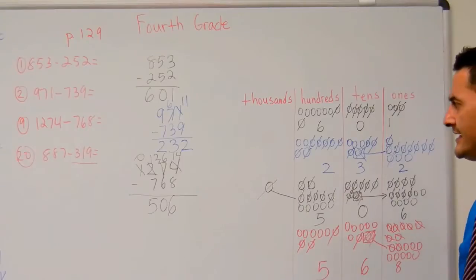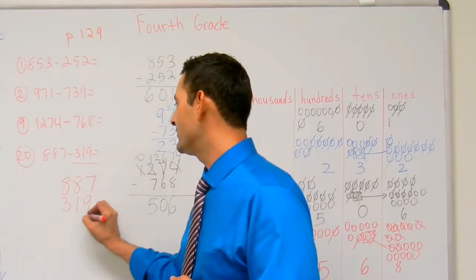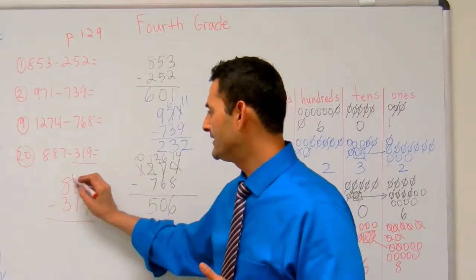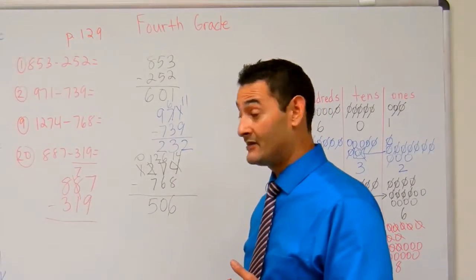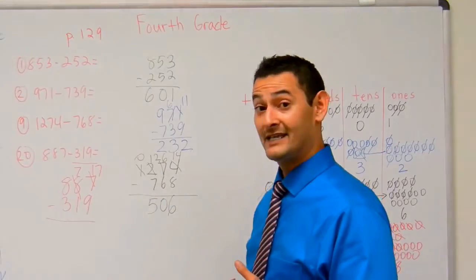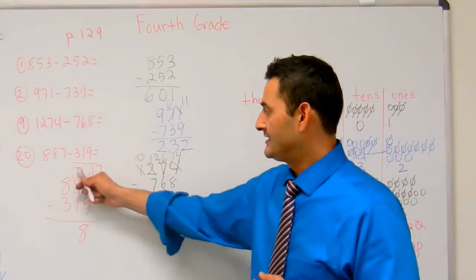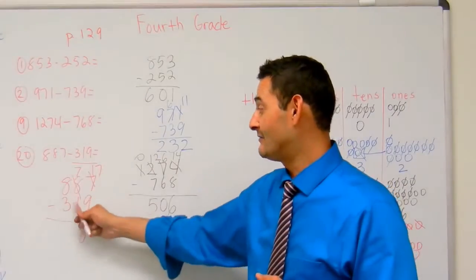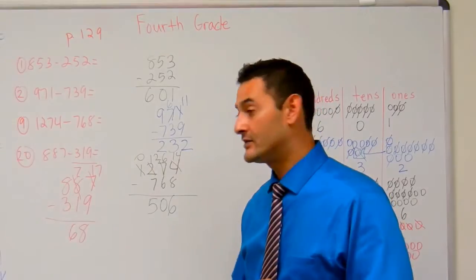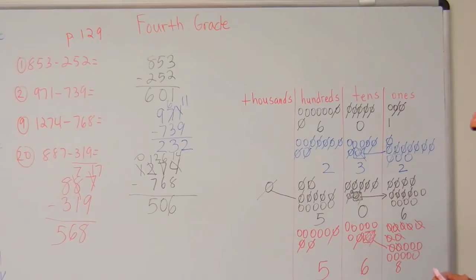The answer should be 568. Let's do that over here in the standard algorithm. 887 minus 319. Seven take away nine — I can't do that. I'm going to borrow from the tens, which becomes seven. That gives me seventeen ones. Seventeen minus nine is eight. Seven tens minus one ten equals six tens. Eight hundreds minus three hundreds is five hundreds. The answer is 568, just like we have right there.